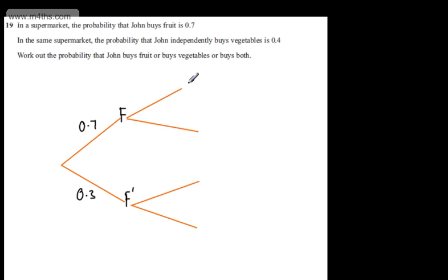We're told now John buying vegetables is independent, so I can put veg, not veg, 0.4, 0.6. Again, these branches need to add to one.